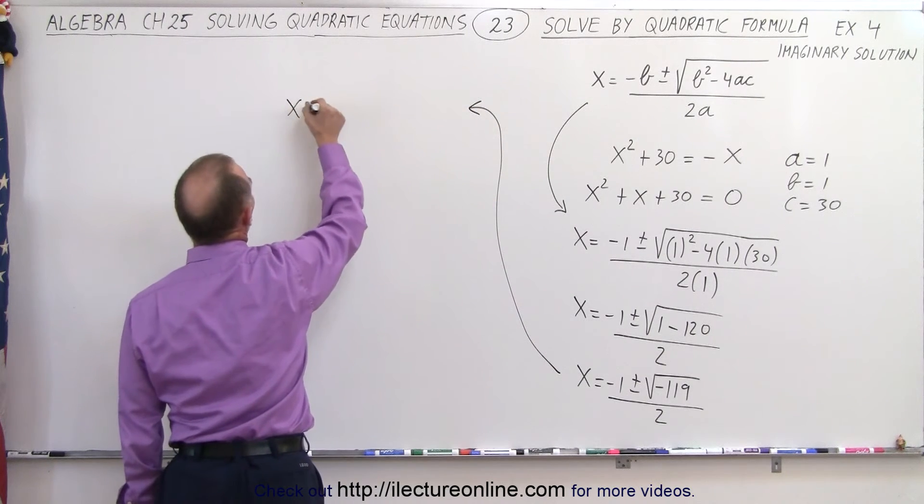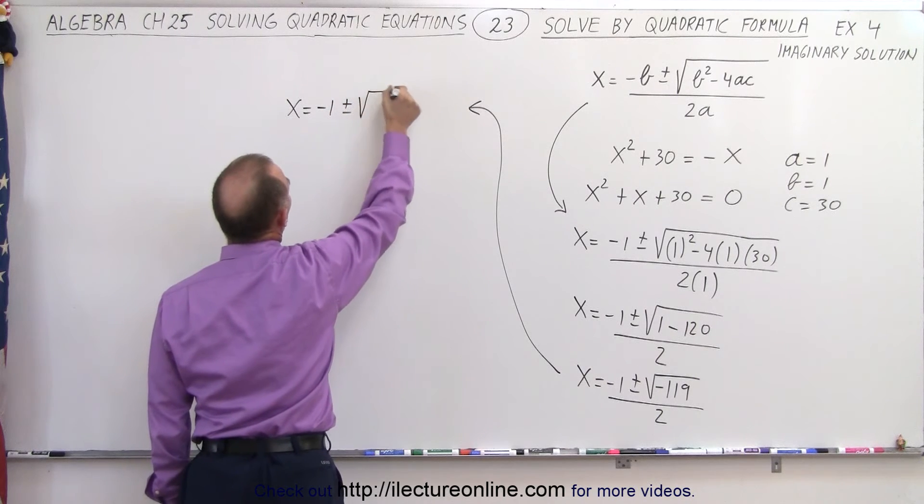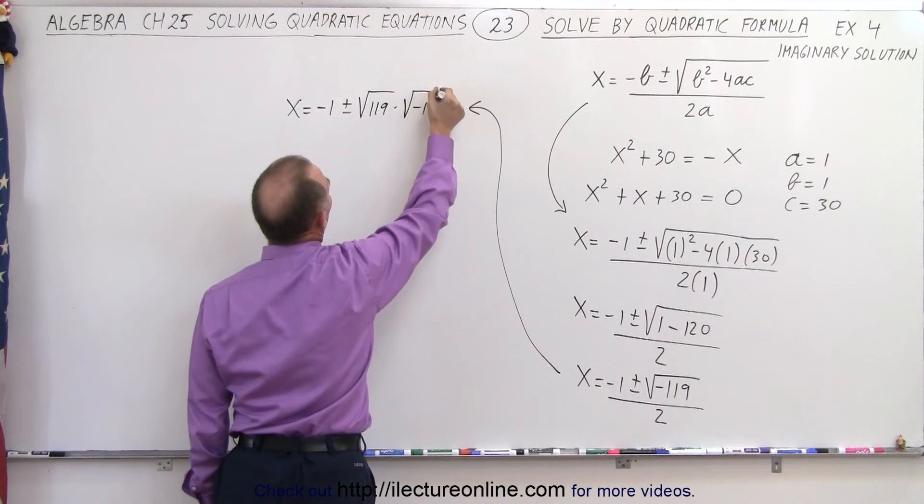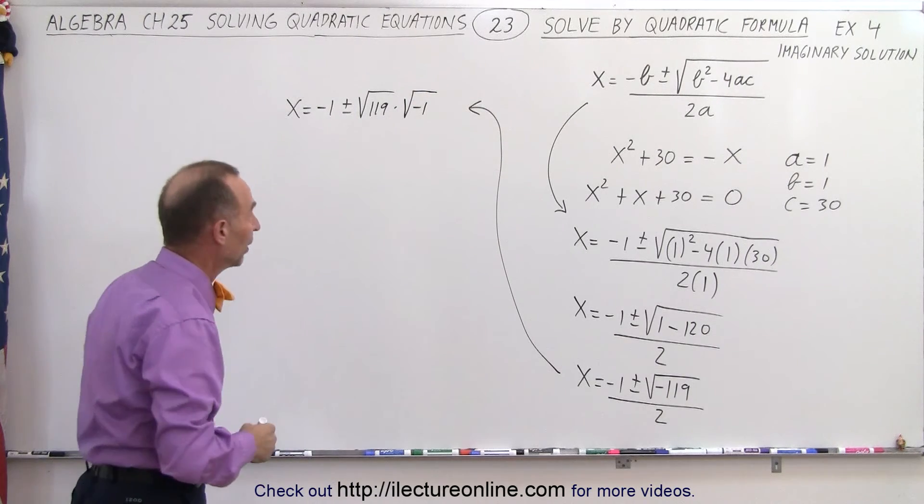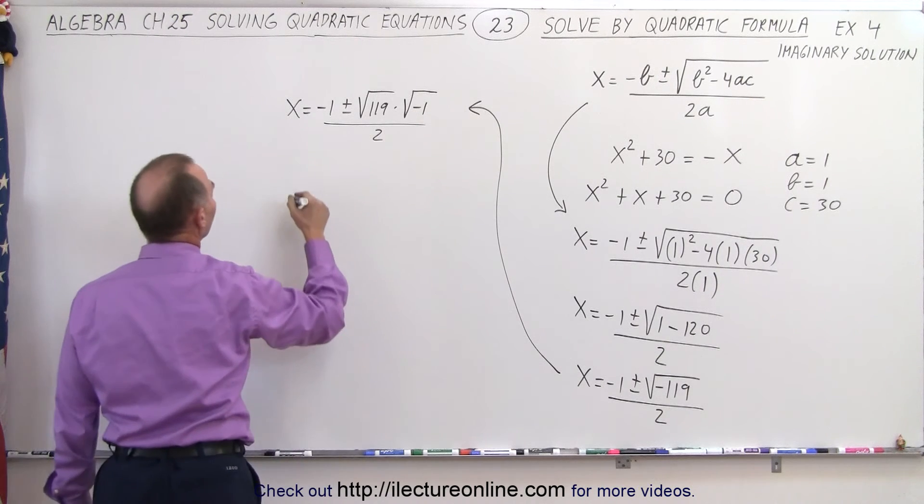Therefore, we get x is equal to minus 1 plus and minus the square root of 119 times the square root of a negative 1. What I did was I factor out negative 1, and we have that divided by 2. The square of negative 1 is equal to i.